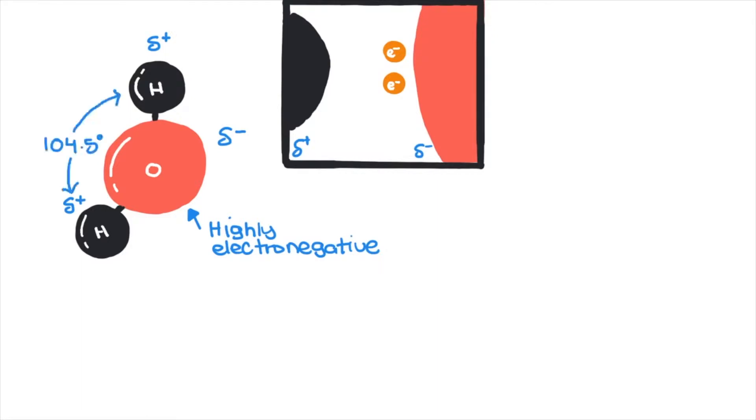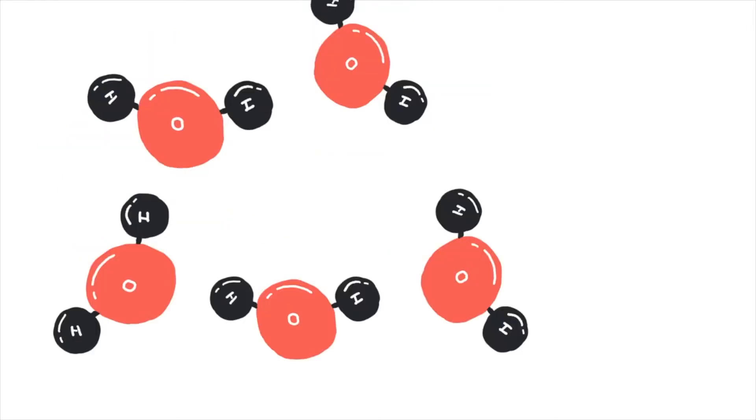As well as being a bent molecule, this results in an overall dipole. So when individual water molecules are in close proximity to each other, they form these strong hydrogen bonds due to these dipoles, not only with each other.